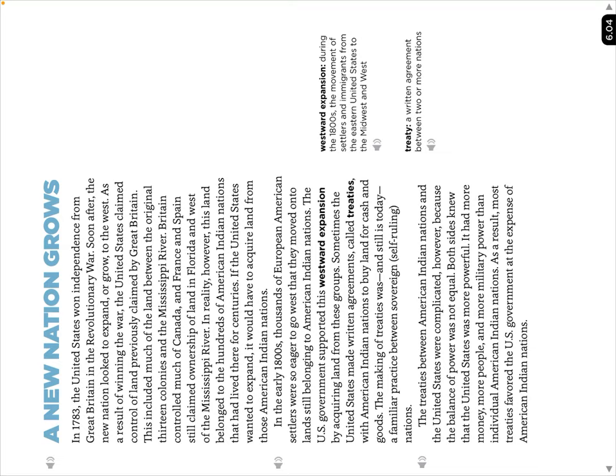Imagine somebody came knocking on your door saying they want your house — they'd give you some money and some stuff for it. The making of treaties was and still is today a familiar practice between sovereign, self-ruling nations. On the bottom of page 6.04: the treaties between American Indian nations and the United States were complicated because the balance of power was not equal — both sides knew that the United States was more powerful.